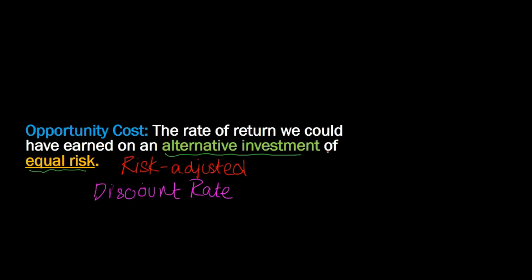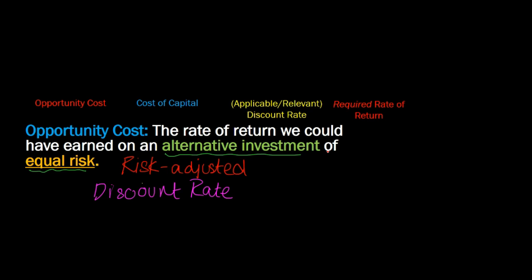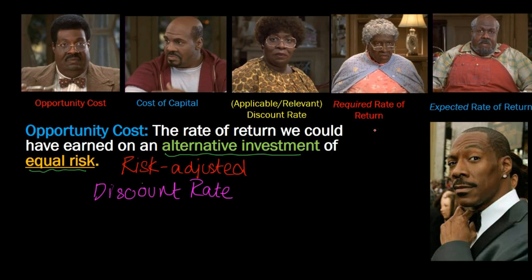So my point is this: when you hear the term opportunity cost, or cost of capital, or applicable discount rate, or relevant discount rate, or risk-adjusted discount rate, or required rate of return, or even expected rate of return — they all mean the exact same thing. By the way, this is Eddie Murphy playing all these different roles in the movie Nutty Professor — all these five guys are basically one guy. And that's kind of my point: opportunity cost, cost of capital, discount rate — all these terms are basically different ways of saying the exact same thing.